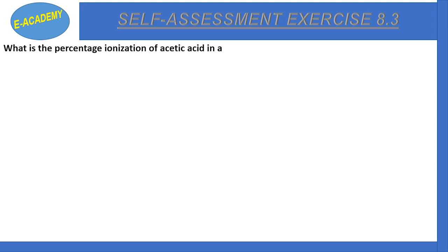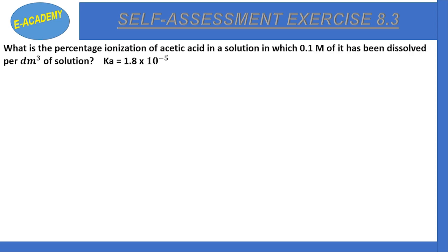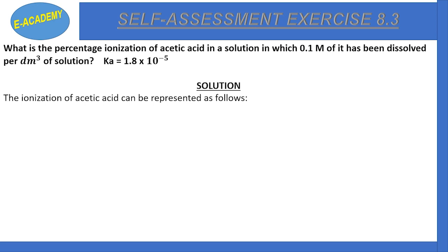Self-assessment exercise 8.3: What is the percentage of ionization of acetic acid in a solution in which 0.1 molar of it has been dissolved per dm³? Ka for acetic acid is given as 1.8 × 10⁻⁵ and molarity is 0.1 molar. The ionization of acetic acid is represented as: CH₃COOH ⇌ CH₃COO⁻ + H⁺.